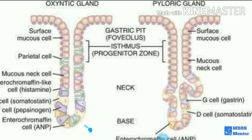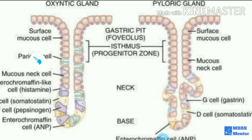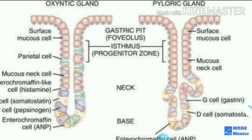This is a diagram in which various cells are shown. These are the surface mucus cells, which secrete mucus. These are the parietal or oxyntic cells, which secrete HCL. These are the mucus neck cells. These are the enterochromaffin cells, which secrete histamine. This is the G cell. And again mucus neck cells and surface mucus cells.